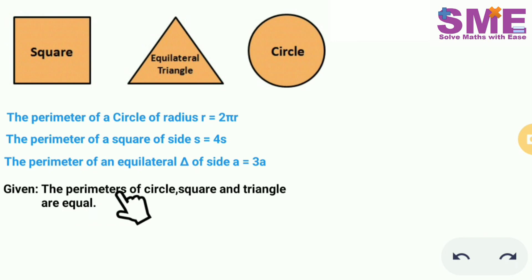Now it is given that the perimeters of all these three figures are equal. So we can say that 2πr is equal to 4s is equal to 3a.